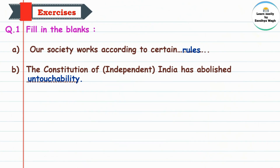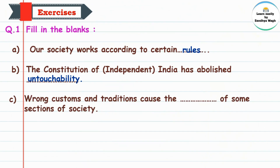Untouchability manje asprishyata. Wrong customs and traditions cause the dash of some sections of society. 'Customs' manje pratha, 'tradition' manje parampara. Chukichya pratha ani paramparenamule samajaatil kaheka ghatakachi upeksha hote. 'Upeksha' manje neglect. So, wrong customs and traditions cause the neglect of some sections of society.